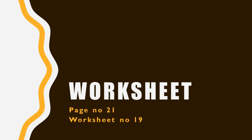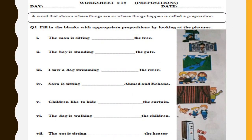Now we are going to solve a worksheet. The worksheet is on page number 21 — worksheet number 19: Prepositions. A word that shows where things are or where things happen is called a preposition. Question number one: fill in the blanks with appropriate prepositions by looking at the pictures.